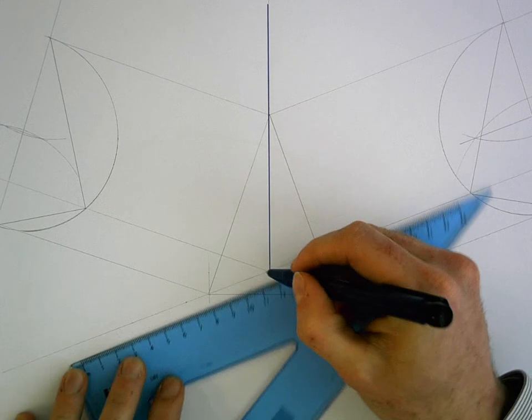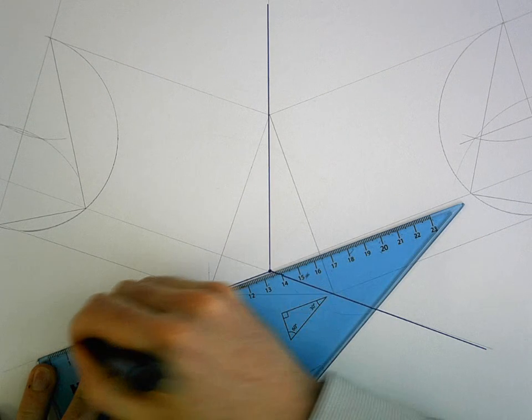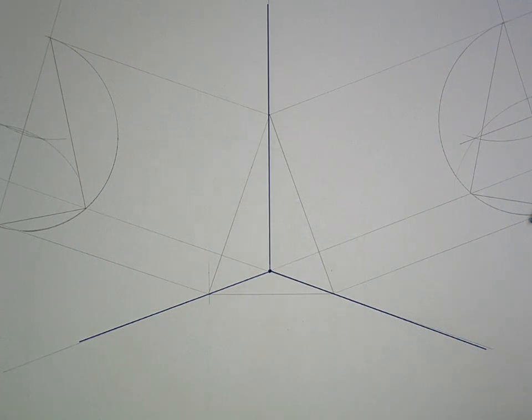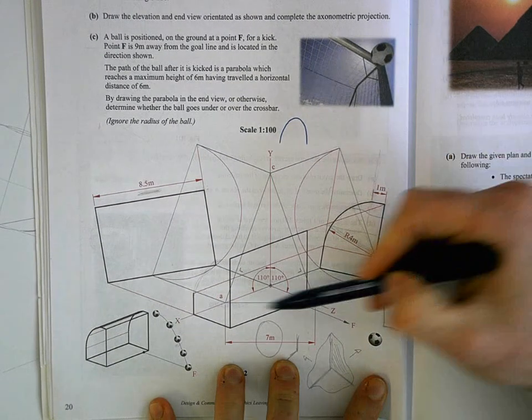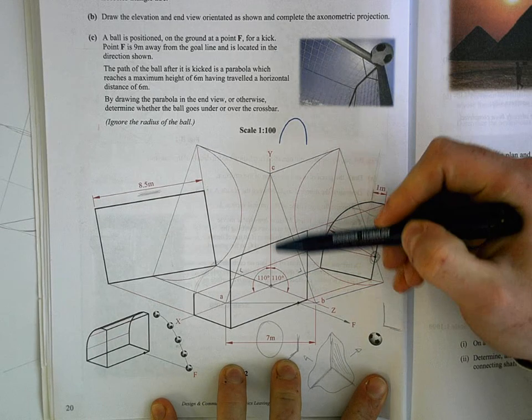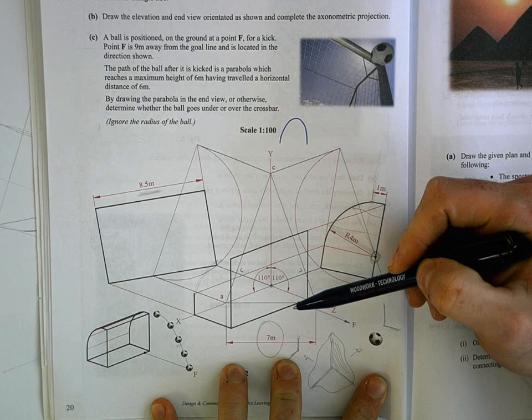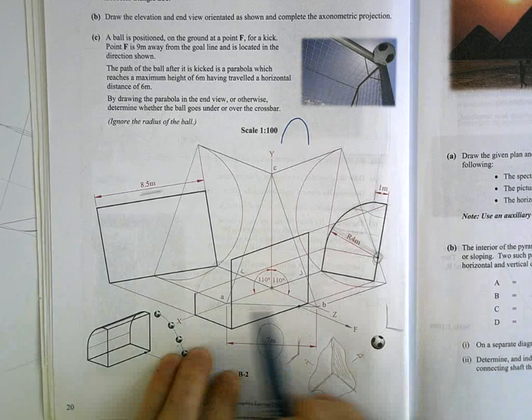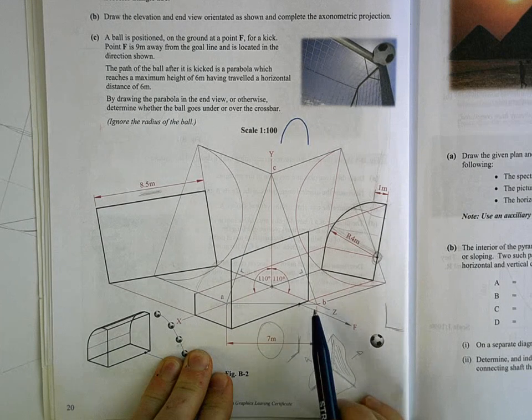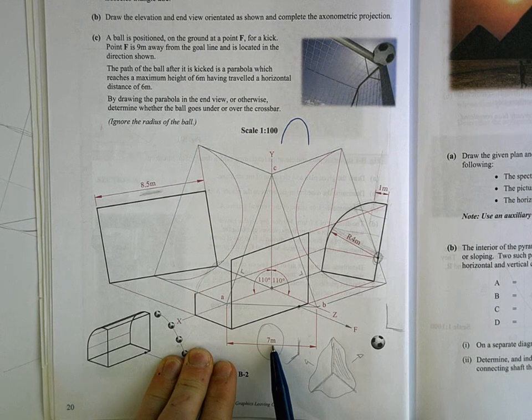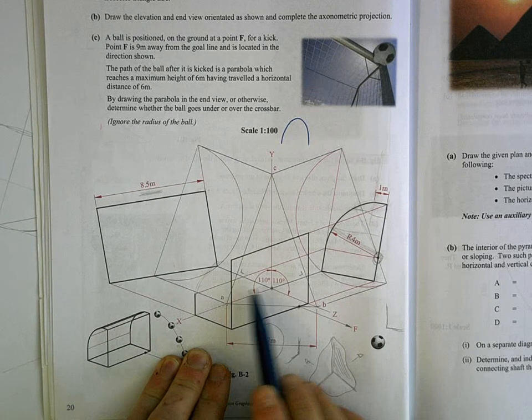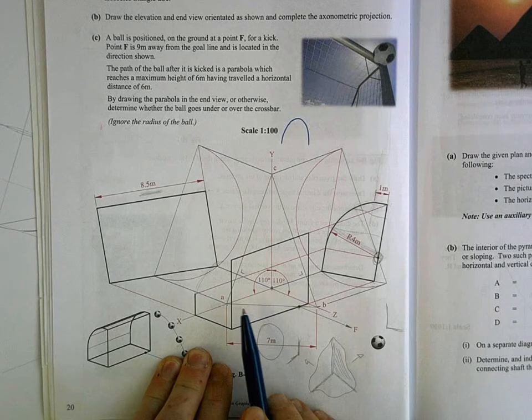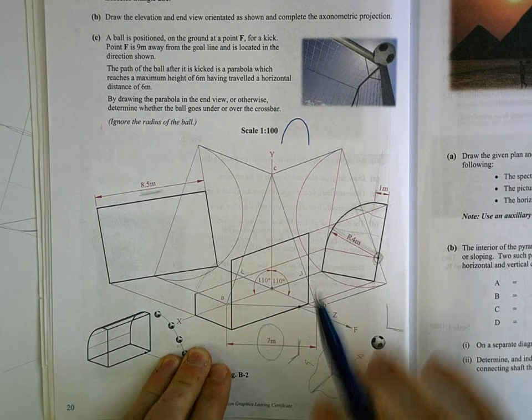And again, that angle will vary depending on the question. So just make sure, don't presume it's any particular angle, double check it. The next thing to do with this is to look for a clue for the size of this triangle that you have to draw. And they'll always give some sort of a clue as to what size they want it to be. In this case, what they told us was the distance between point A and point B is 7 metres. So you're going to split it down the middle, 3.5 metres to the left, 3.5 metres to the right, and that will find point A and point B for you.